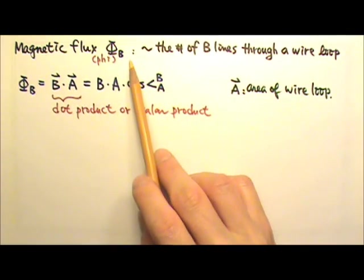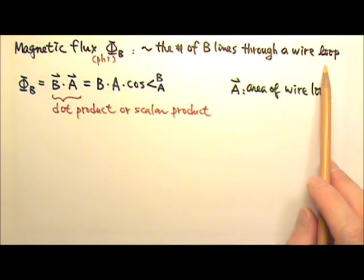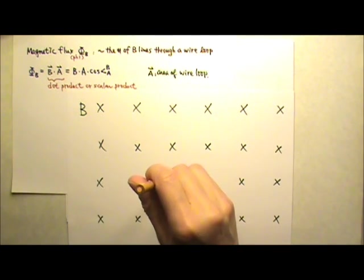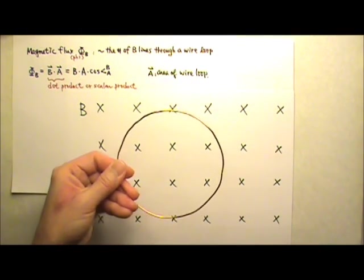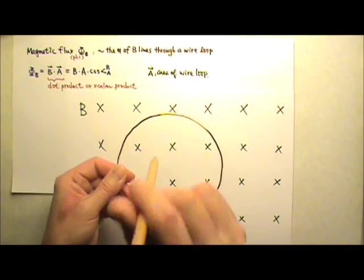Magnetic flux is kind of like the number of magnetic field lines going through a wire loop. For example, let's say we have a uniform magnetic field going into the paper, and I have a wire loop over here. When the wire loop is like this, there are a certain number of field lines going through this loop.